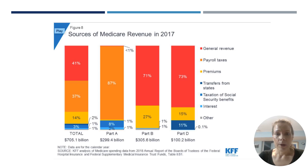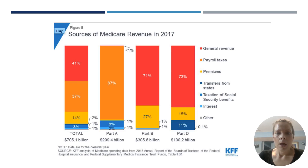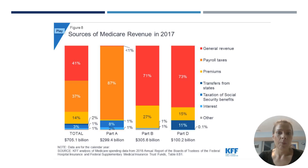There are transfers from the federal government, and we see that more in Medicare Part B, which is the third column from the left. About 71% of the funding for Medicare Part B is coming from the general federal government. The remaining 27% comes from beneficiaries paying premiums, and your premium as a Medicare Part B beneficiary — which covers outpatient services — is based on your income.